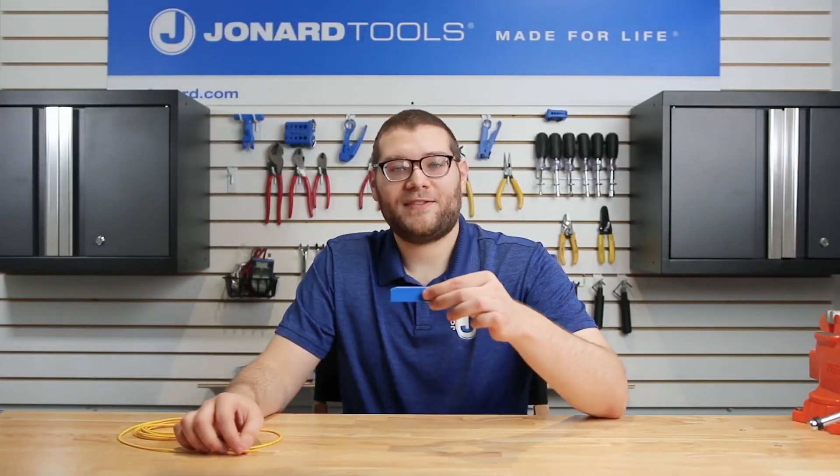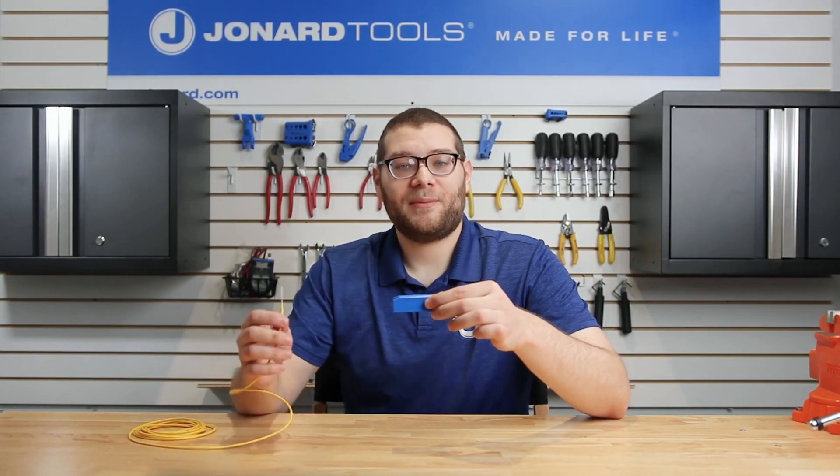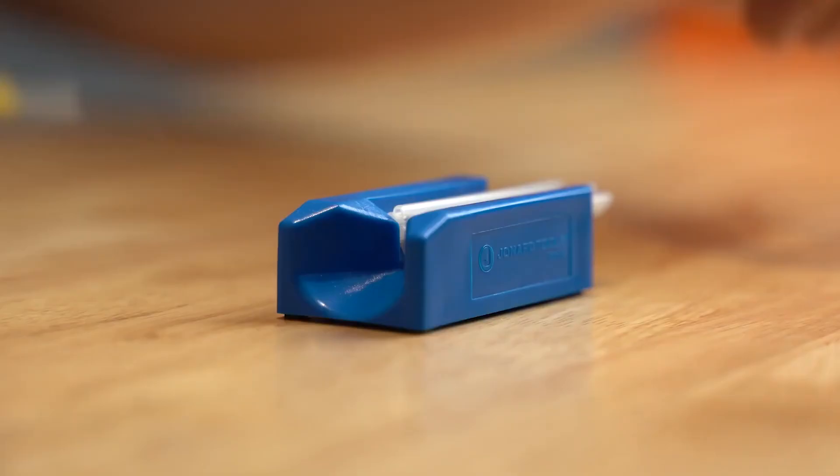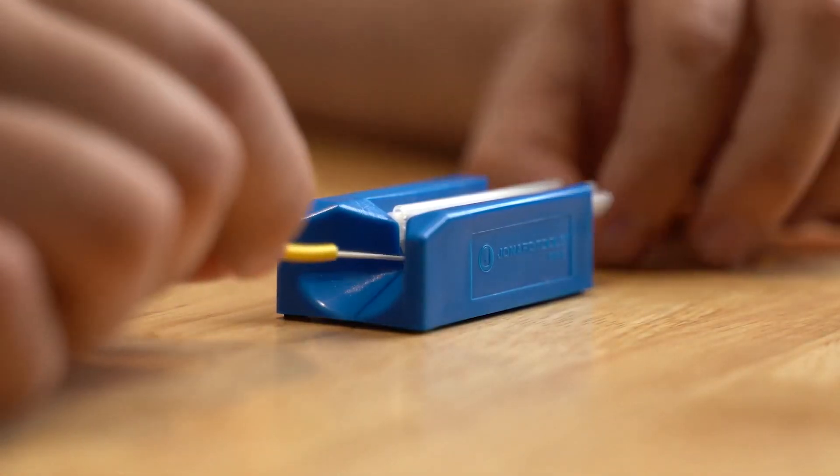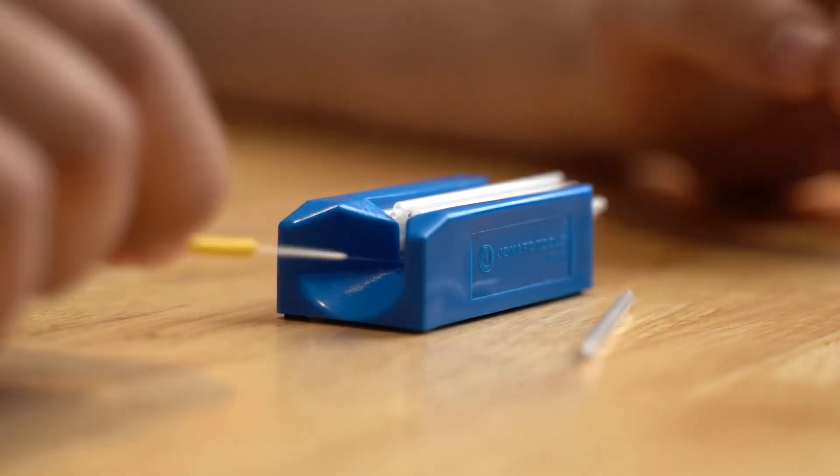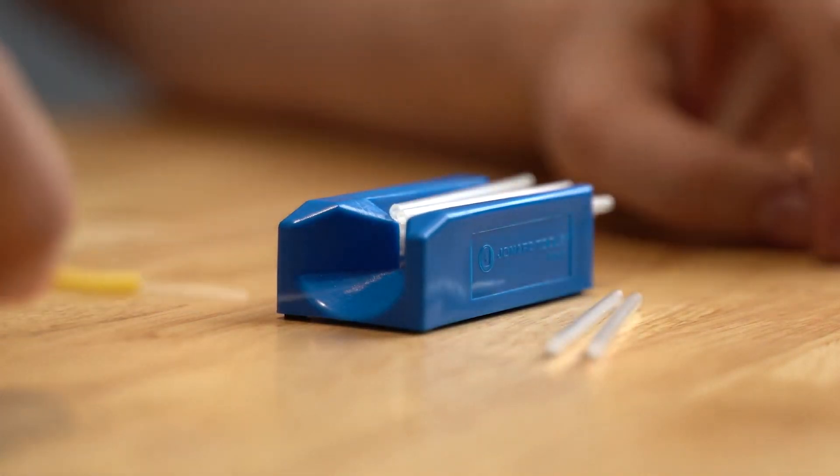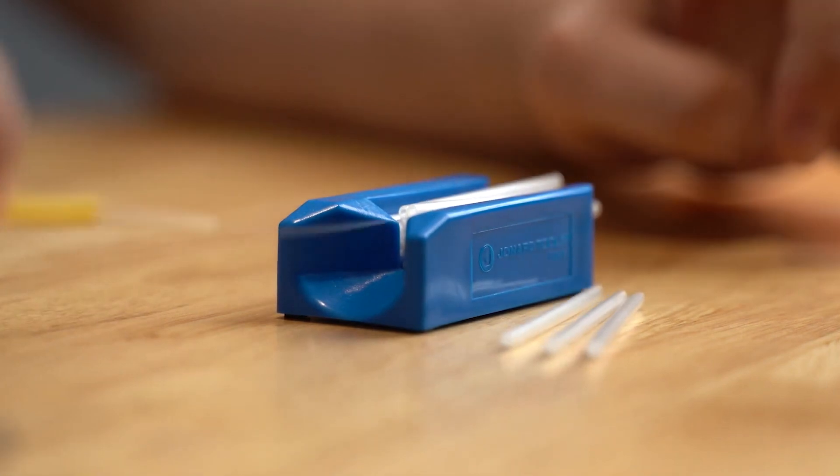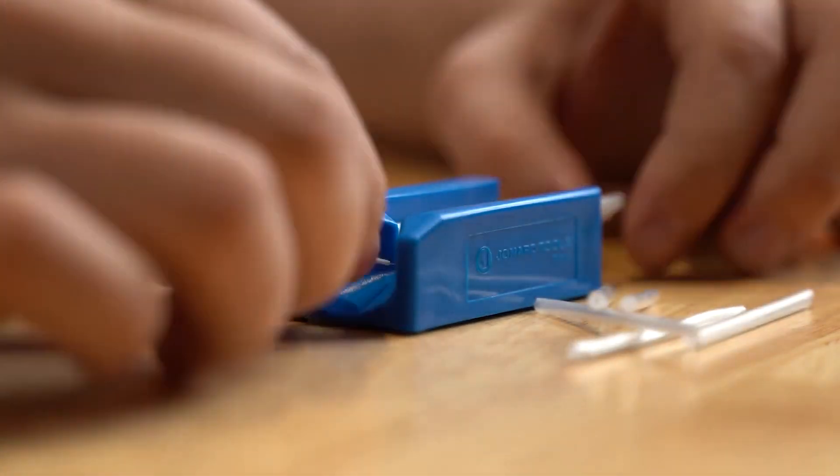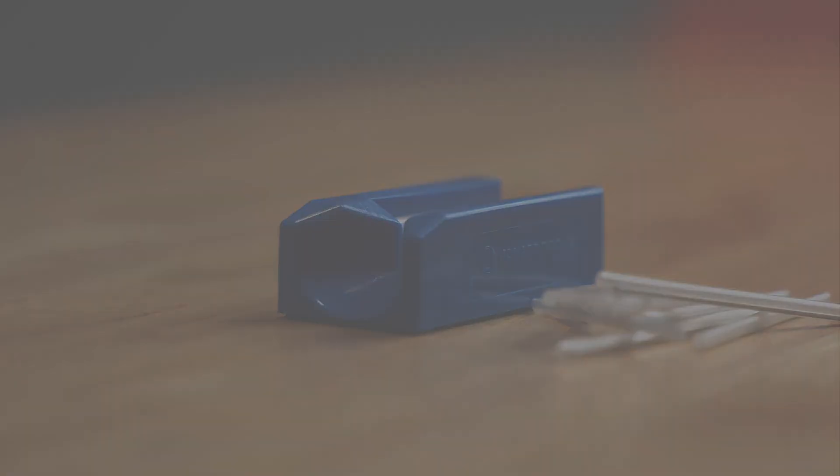The PSI 15 protection sleeve insertion tool makes loading fiber onto protection sleeves quick and easy. Instead of having to thread the fiber into each protection sleeve, you can use this tool to do it very, very quickly.